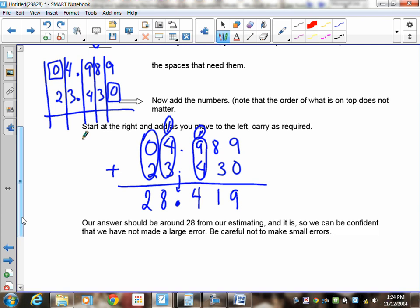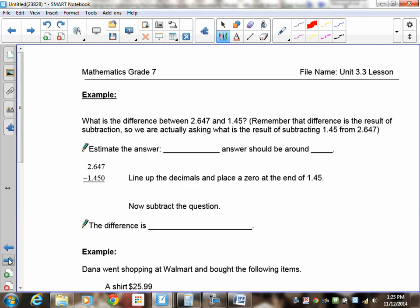Since we rounded up top and we found that my answer should be around twenty-eight from the estimating, you can be confident that you haven't made a huge error. That doesn't necessarily mean that you didn't make a mistake. If you made a silly error, you may have had twenty-eight point three one nine or something. I can't help you if you can't add nine and four and carry the one. Make sure you take care as you're adding to carry properly and correctly.